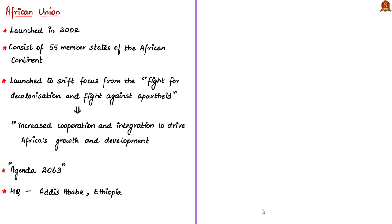The African Union was launched in the year 2002 and consists of 55 member states — nations in the African continent. Earlier, there was an organization called the Organization of African Unity (OAU), whose primary focus was decolonization and the fight against apartheid. Apartheid is the practice of discrimination on the basis of race or skin color. In 1999, the African countries decided to move towards growth and development, and the OAU issued the Sirte Declaration calling for the establishment of an African Union, which was finally launched in 2002 to shift focus from decolonization towards increased cooperation and integration for Africa's growth and development.